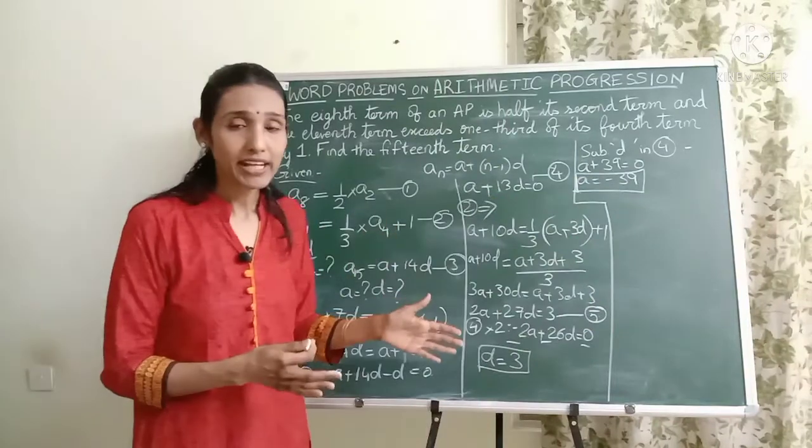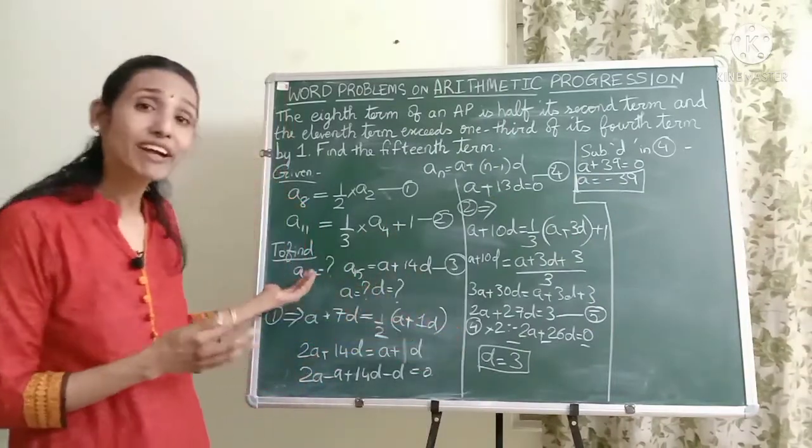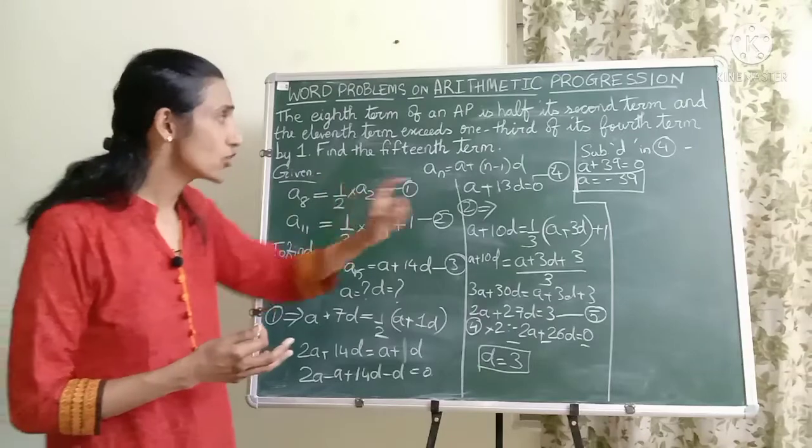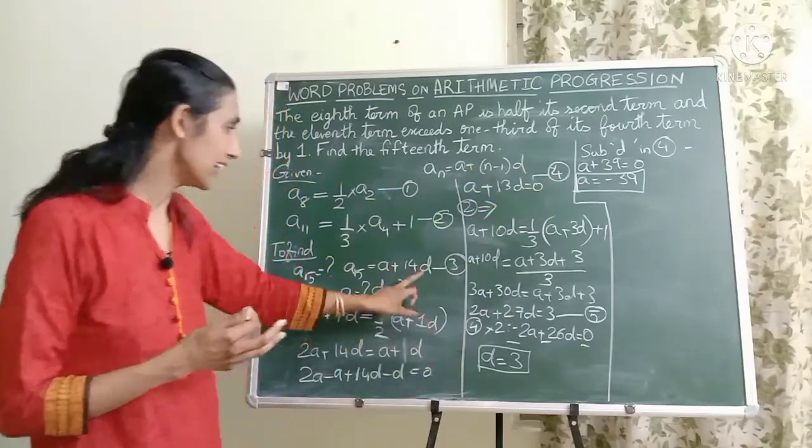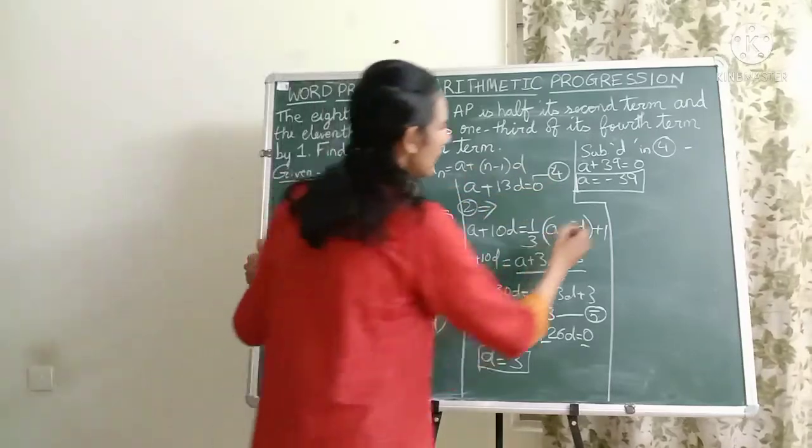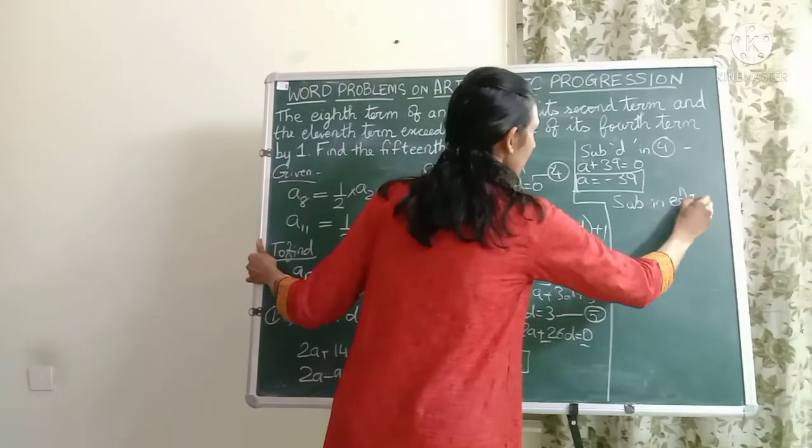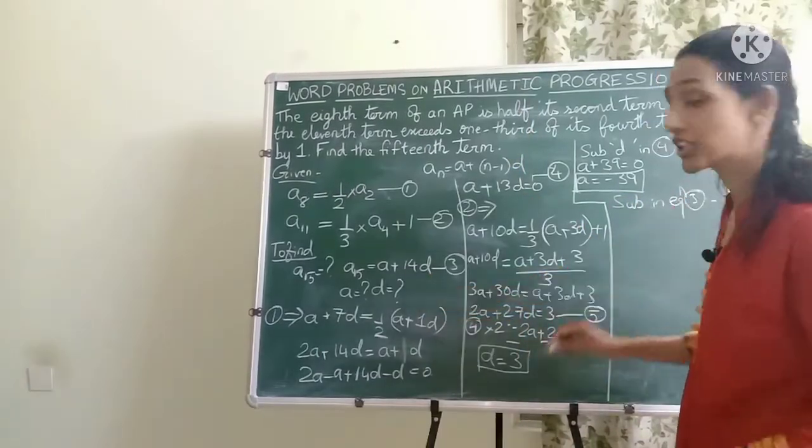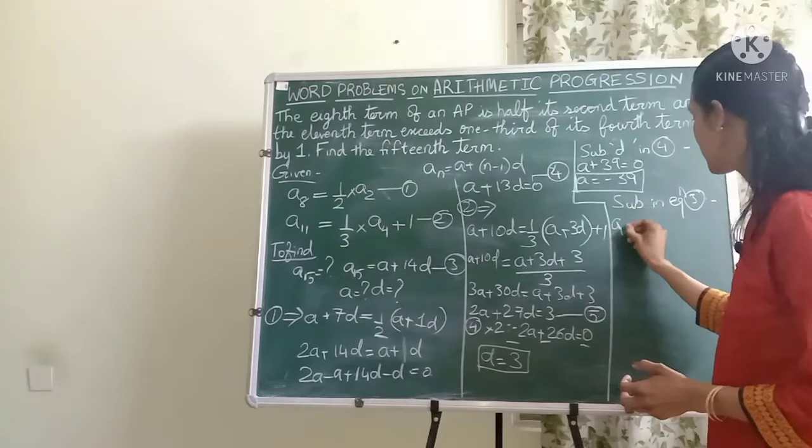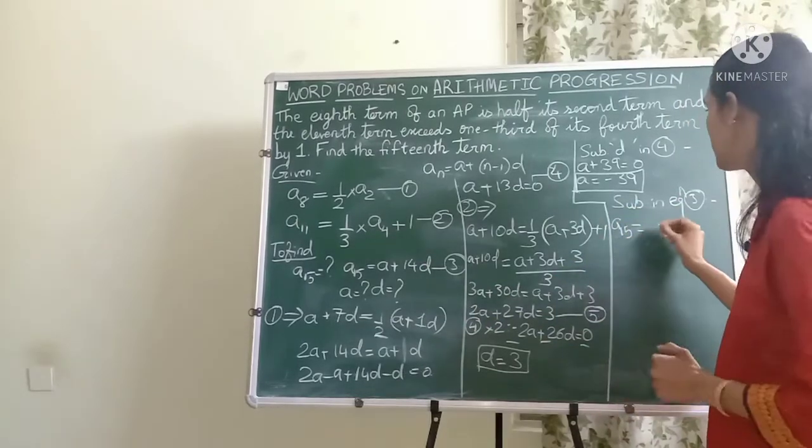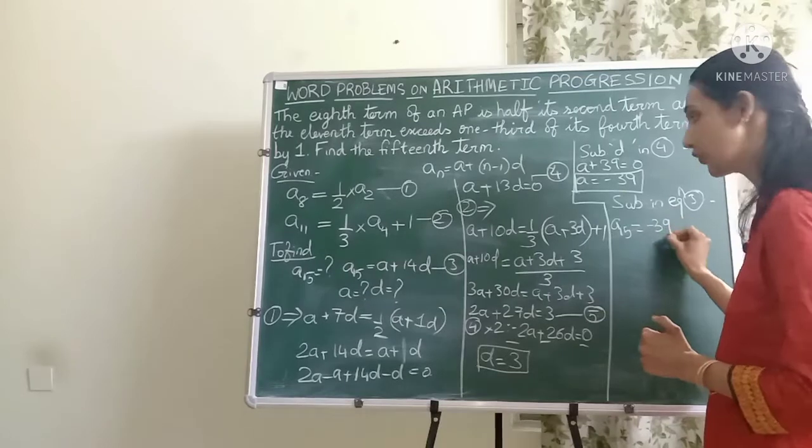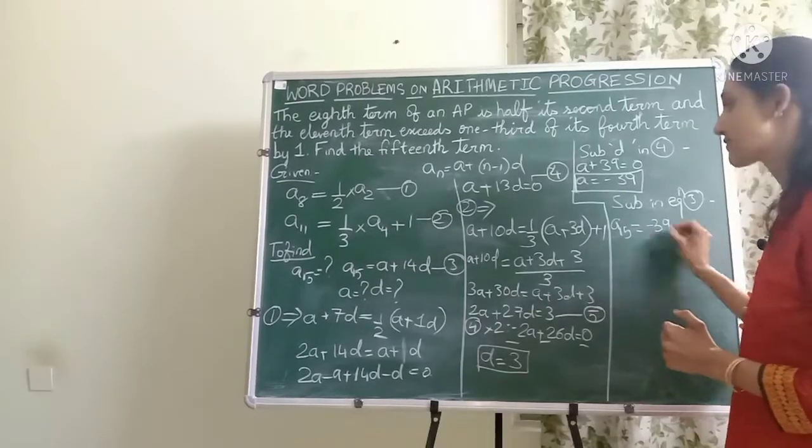So friends, is this the final answer? No, because we want to find A15. So we need to substitute the values of A and D in equation 3. So let's substitute in equation 3. When I put it in equation 3, I'll get A15 equals minus 39 plus 14 into 3.